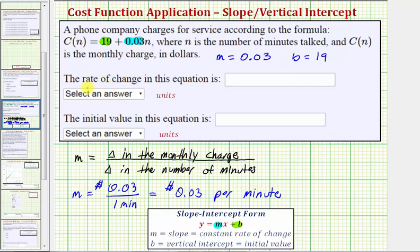So for this first statement, the rate of change in this equation is 0.03, and we're supposed to select the units from this drop-down menu, which would be dollars per minute.